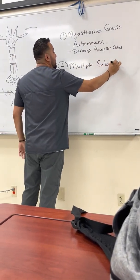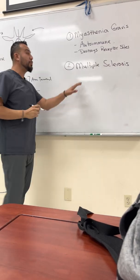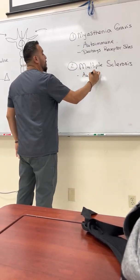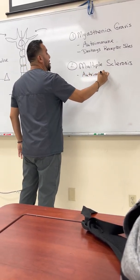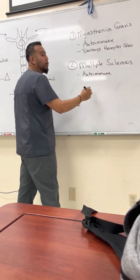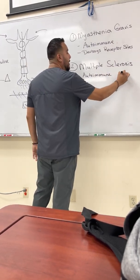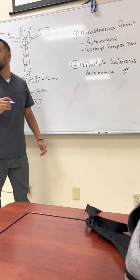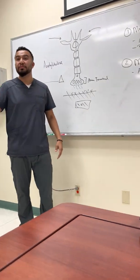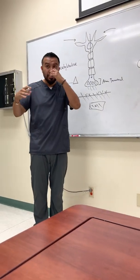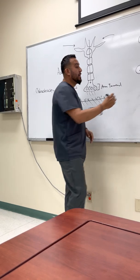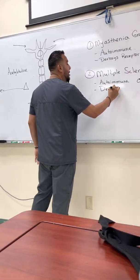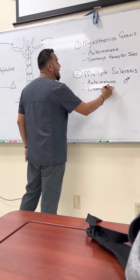Another condition is multiple sclerosis. Multiple sclerosis is also an autoimmune issue. It happens more to women than men, and it affects them relatively young — in their 20s and 30s.